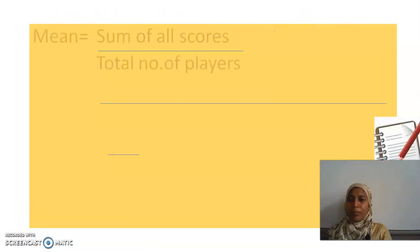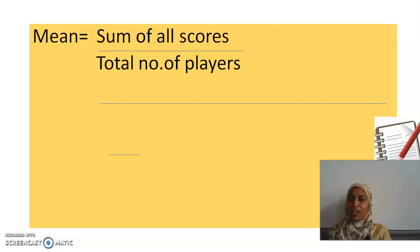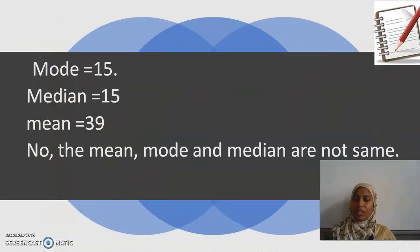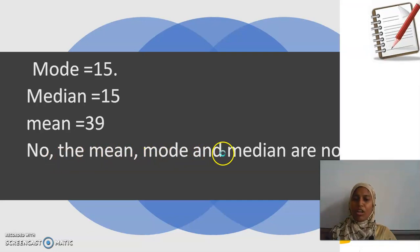Now let us find mean for this. Mean is equal to sum of all scores divided by total number of players. This is very simple my dear children. You have to work out this slide on your own because you are familiar with the tool mean. I have given you the answer 429 divided by 11. You have to cancel it. The answer will be 39. Now then I have to check whether all are same. Here they are not same. So you have to conclude: No, the mean, mode, and median are not same.